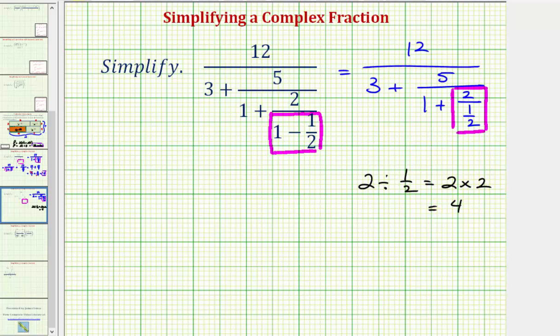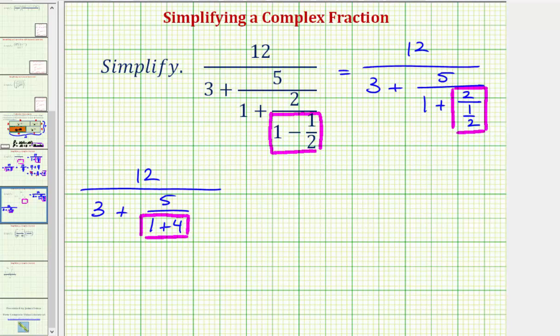So we can rewrite this as 12 all over 3 plus 5 all over 1 plus 4. Next we'll simplify one plus four, which we know is equal to five.